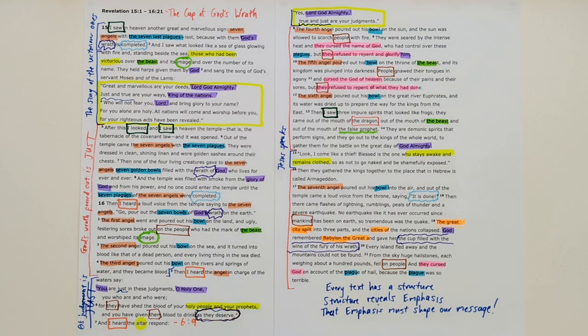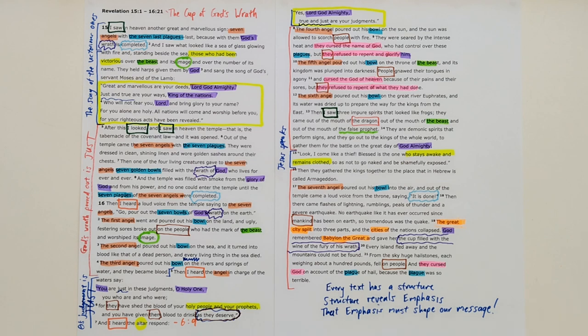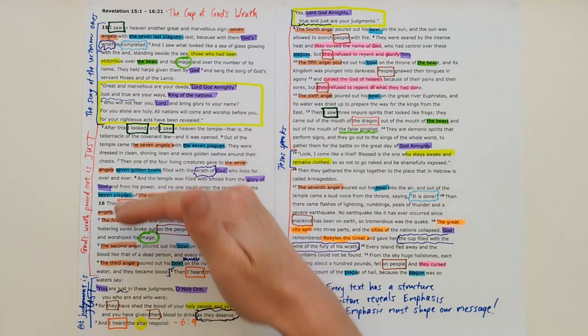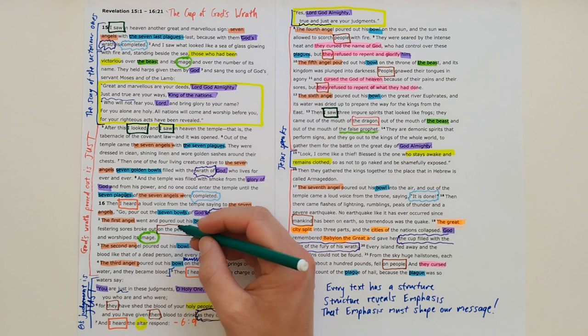Just something else to notice here: what we saw when the trumpets were blown, there was this partial judgment. But here we see every living thing - it's a complete judgment. Now this isn't the warning, this isn't the trumpets of warning anymore. This is the final judgment. And although we see the seven angels pouring out their bowls, the force of this we need to understand is all happening together. This is seven being that number of completeness. This is the complete judgment of God unfolding on that great and final day.